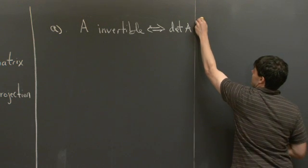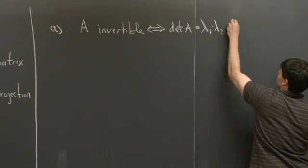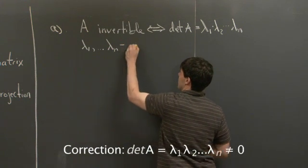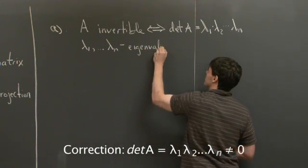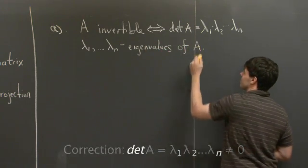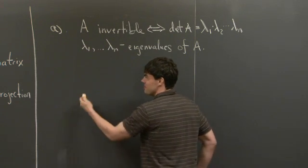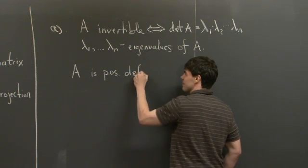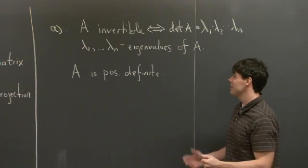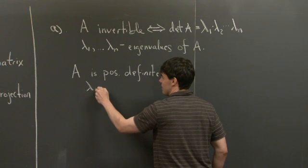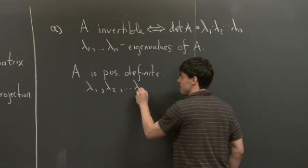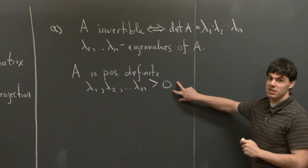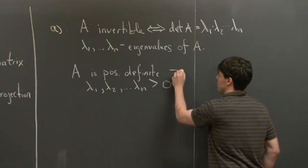I'm going to write out det(A) as the product of the eigenvalues of A — lambda 1 through lambda n. In addition, if A is positive definite, what does this say about the eigenvalues of A? It says that each eigenvalue of A, lambda 1, lambda 2, ... to lambda n, must each be bigger than 0. This statement is completely equivalent to A being positive definite for symmetric matrices A.